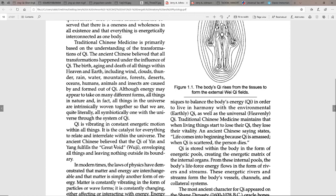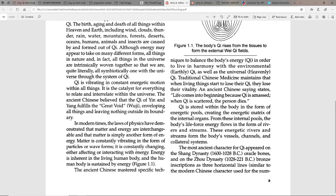But this is all leftover knowledge from the higher civilizations and it's extremely accurate. So chi is stored in the body in the form of energetic pools, creating the energetic matrix of the internal organs.